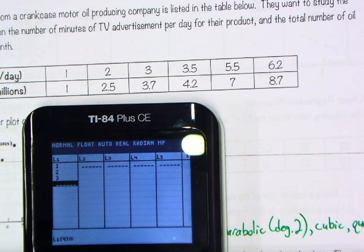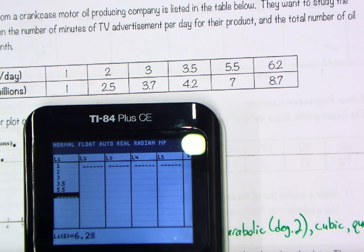So let's quickly enter those: 1, 2, 3, 3.5, 5.5, and 6.2. And of course, between each one of those, I'm just hitting enter so that it will allow me to go to the next element in the set.